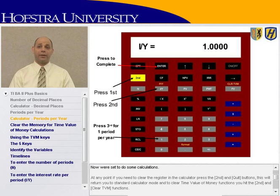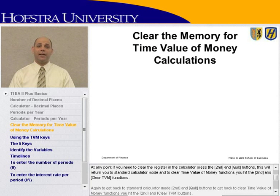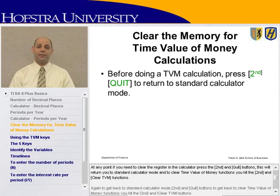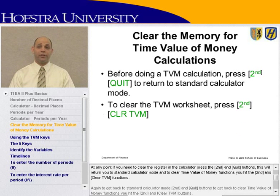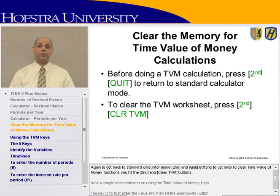Now we're set to do some calculations. At any point, if you need to clear the register in the calculator, press Second and Quit. This will return you to standard calculator mode. To clear time value of money functions, hit Second and Clear TVM. Again, to get back to standard calculator mode: Second and Quit. To clear the time value of money worksheet: Second and Clear TVM.